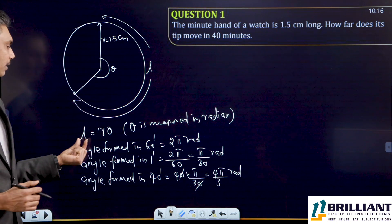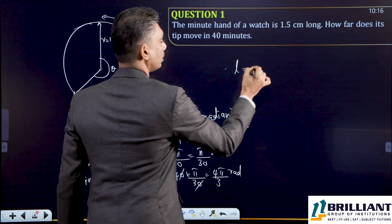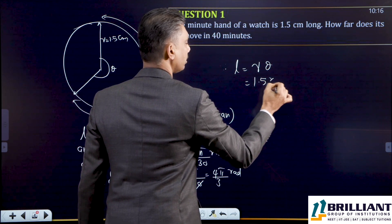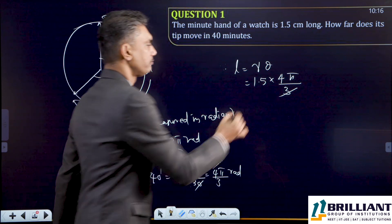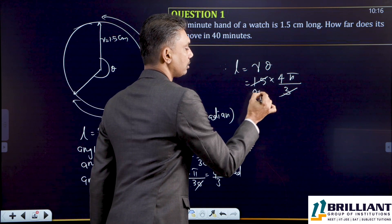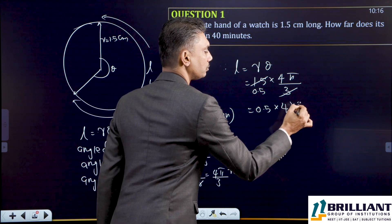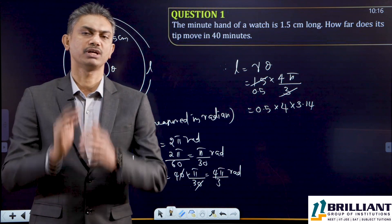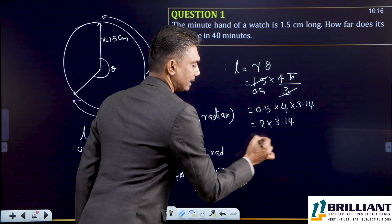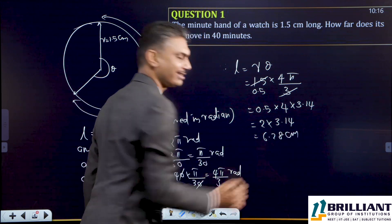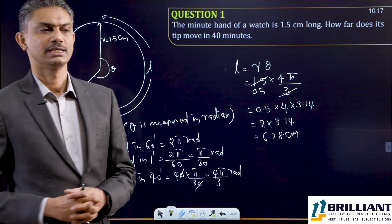Our formula is L = rθ, therefore L = 1.5 × 4π/3. Dividing 3 and 1.5 gives 0.5. So 0.5 × 4 × 3.14 — what is 0.5 × 4? That is 2. So 2 × 3.14 equals 6.28 centimeters. The distance covered by the tip of the minute hand in 40 minutes is 6.28 centimeters.